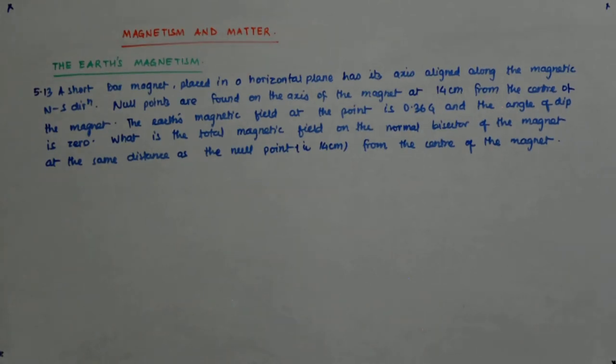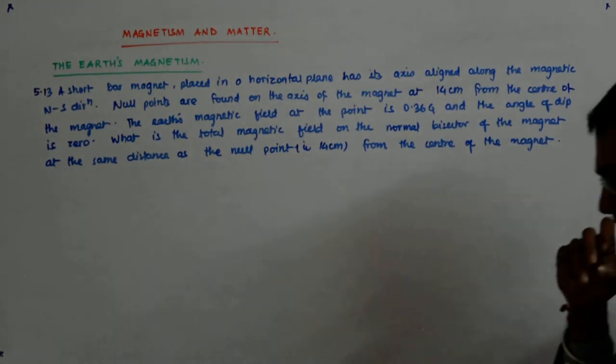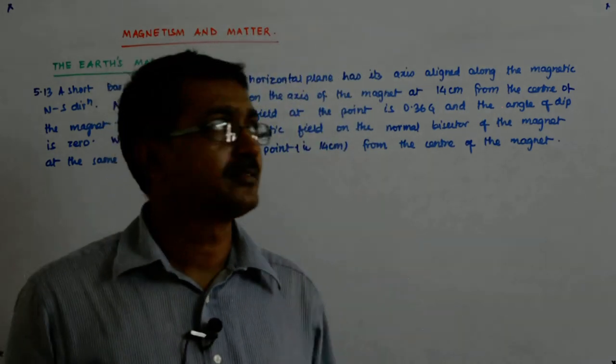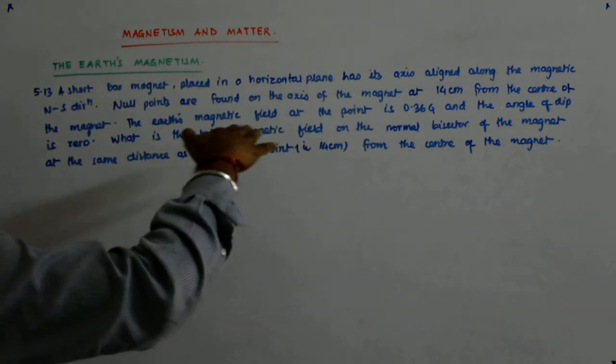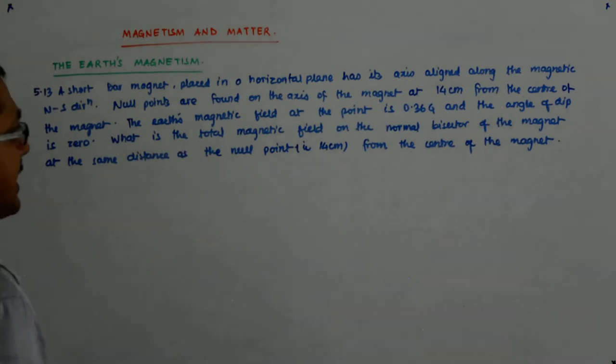Let us solve this question number 5.13. Here it says that there's a short bar magnet placed in a horizontal plane has its axis aligned with the magnetic north-south direction.